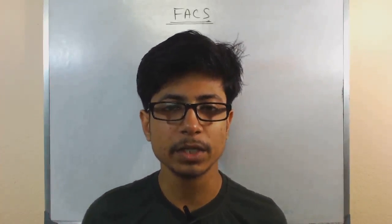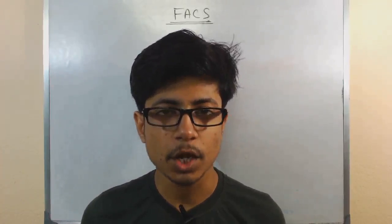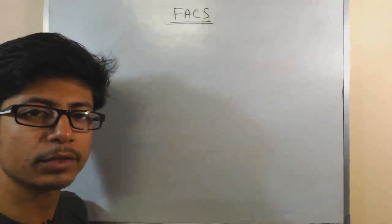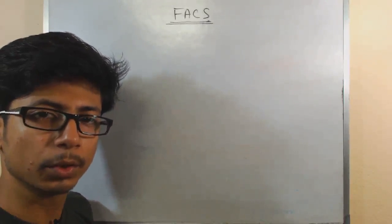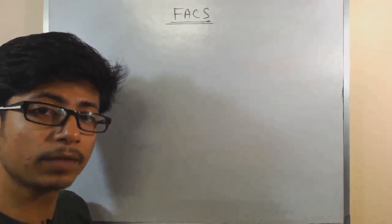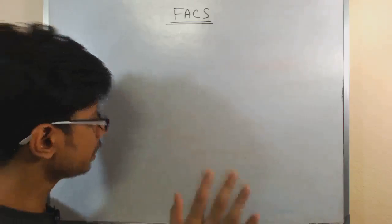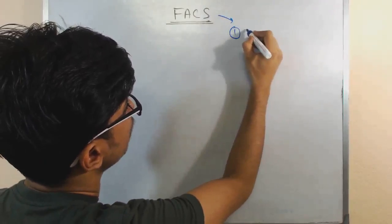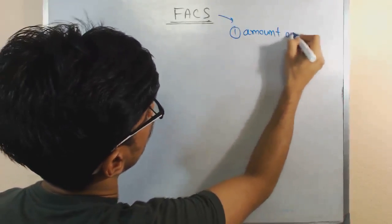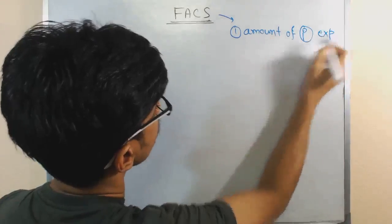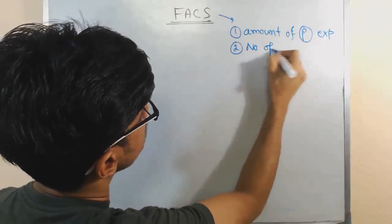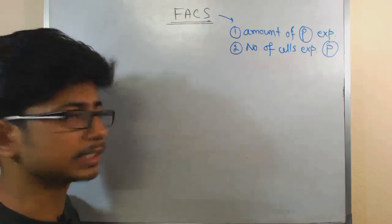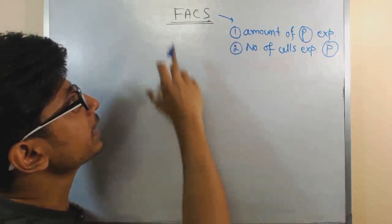Welcome back. In this video lecture we will be talking about FACS - Fluorescent Activated Cell Sorting. It is a type of cytometric process where we ultimately know the expressed proteins as well as the number of cells that are expressing the protein. These are the two major things that we find out using Fluorescent Activated Cell Sorting.